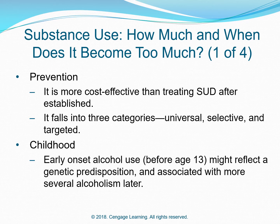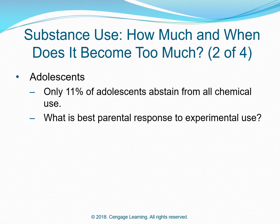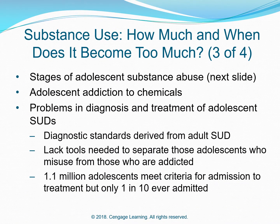Substance use — how much and when does it become too much? Prevention is more cost-effective than treating SUD after it is established. It falls into three categories: universal, selective, and targeted. Early onset alcohol use before age 13 might reflect a genetic predisposition and is associated with more severe alcoholism later. Among adolescents, only 11% abstain from all chemical use. What is the best parental response to experimental use?